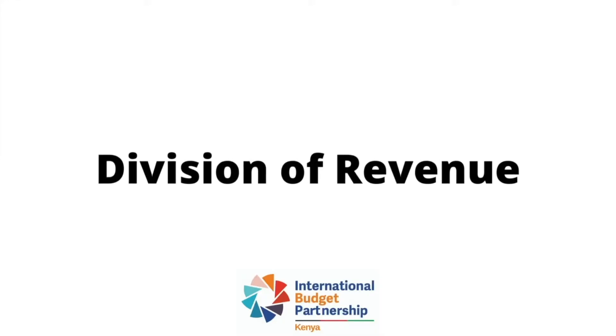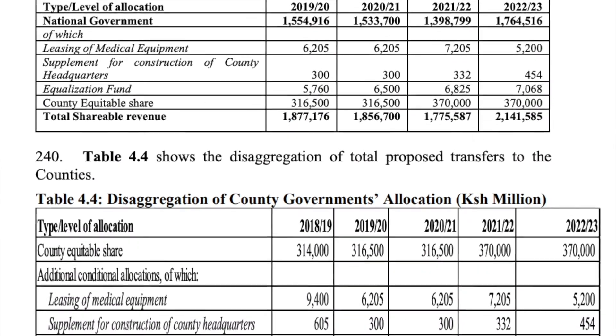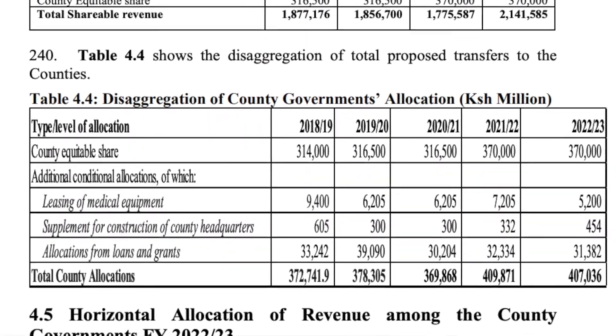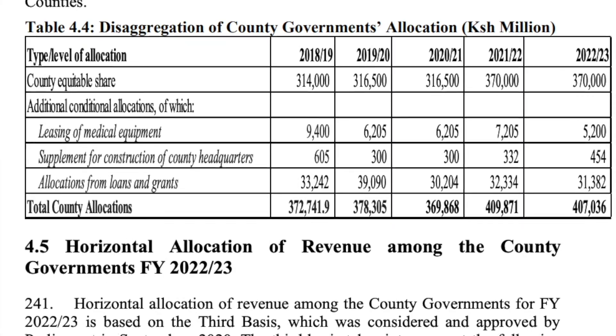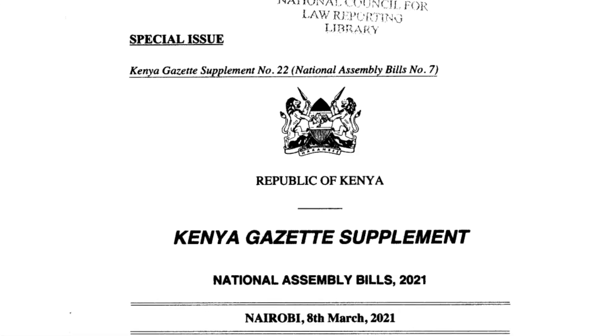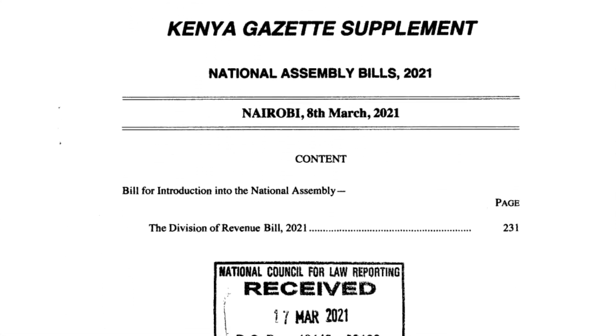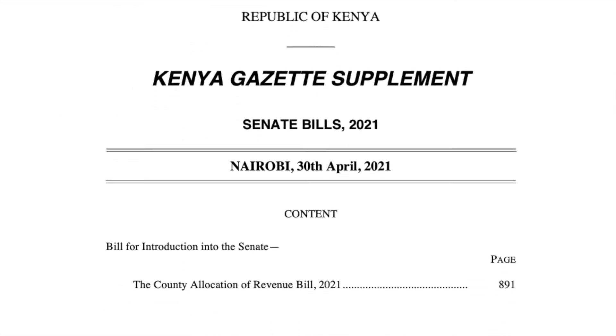The fifth and final element is on division of revenue. The BPS discusses how funds will be divided between the two levels of government — that is, the national level and the county level. It also provides a background to inform the Division of Revenue Bill and the County Allocation of Revenue Bill, which should also be tabled in Parliament by February 15th. This section on division of revenue must justify the overall amount allocated to national and county governments.